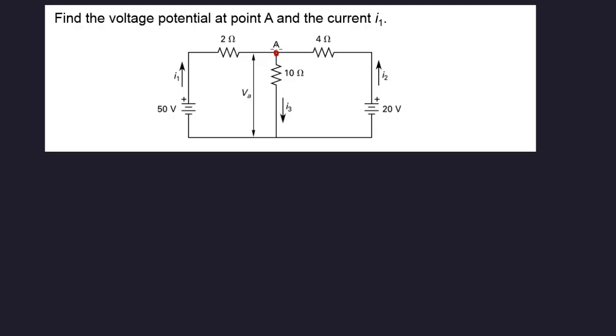So in this particular node if we're applying KCL, the currents going in are equal to the currents going out. So we have going into the node is I1. So I1 plus I2 is equal to I3.